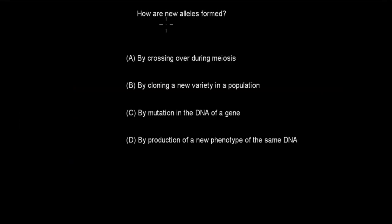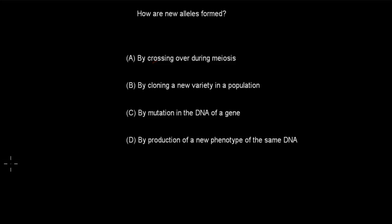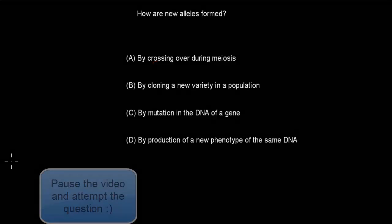Next question. How are new alleles formed? A. By crossing over during meiosis. B. By cloning a new variety in the population. C. By mutation in the DNA of a gene. D. By production of a new phenotype from the same DNA. Pause the video and attempt the question.